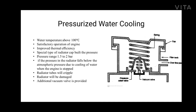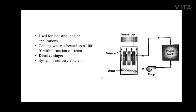Now we will discuss evaporative type cooling. This type of cooling is used in industrial engine applications. The cooling water in this system is allowed to be heated up to 100 degrees centigrade with formation of steam. During the process of steam formation, it absorbs latent heat of vaporization apart from its sensible heat, and due to this, the requirement of cooling water for this type of system is considerably reduced. The steam formed in the cooling circuit is passed off to a separate heat exchanger where it is condensed, and the same condensate is sent back to the cooling system as make-up water. A disadvantage of this system is that it is not very efficient.